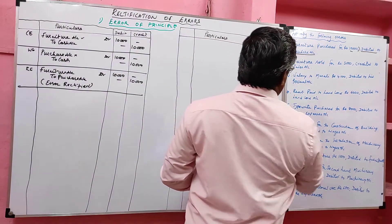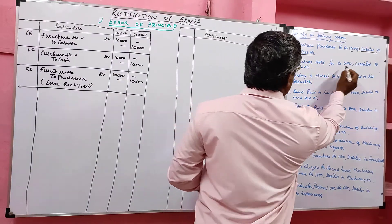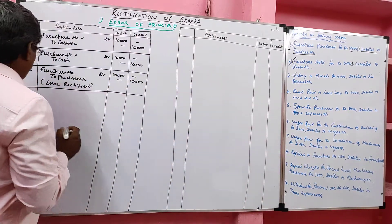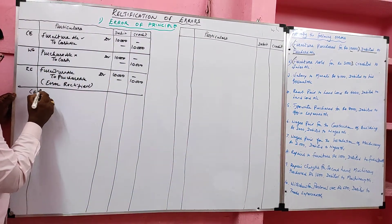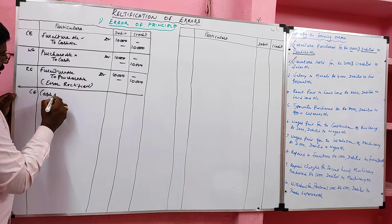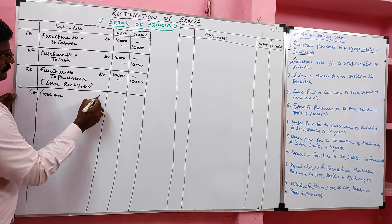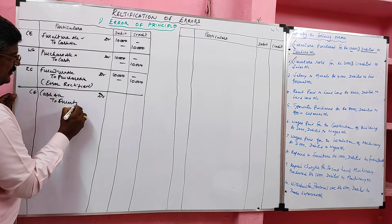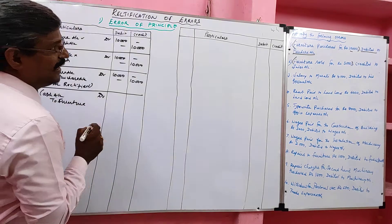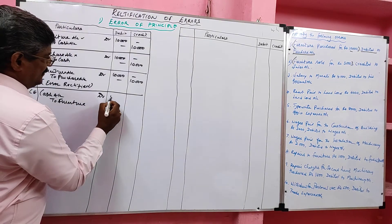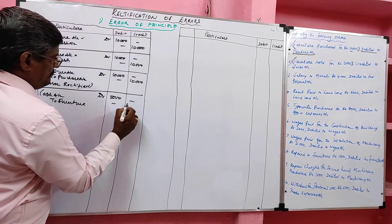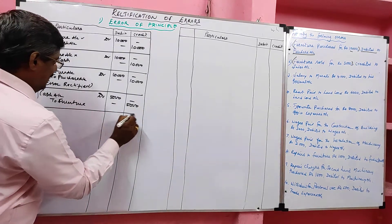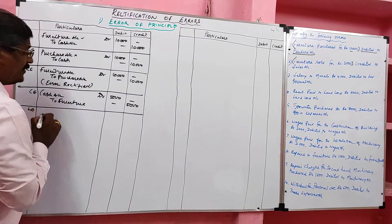Problem 2: Furniture sold for rupees 5,000. The correct entry is: cash account debit to furniture account. This is the correct entry. Now we are going to find the wrong entry — what did they do?